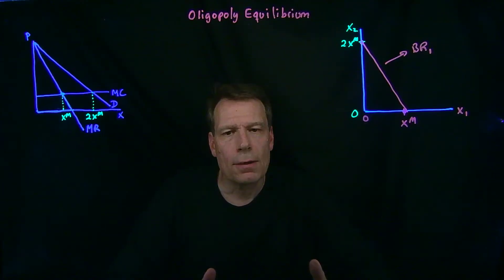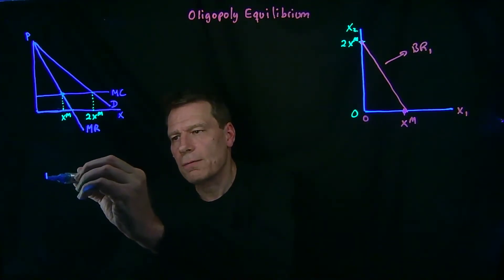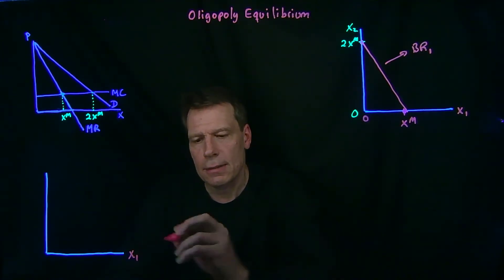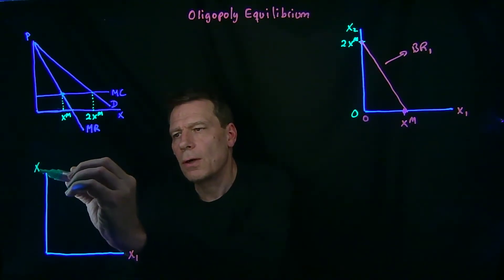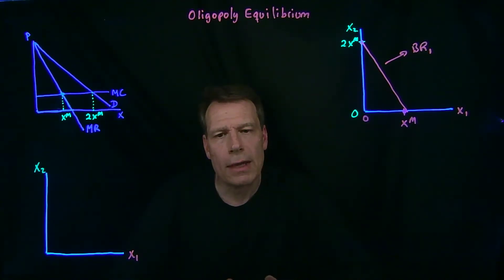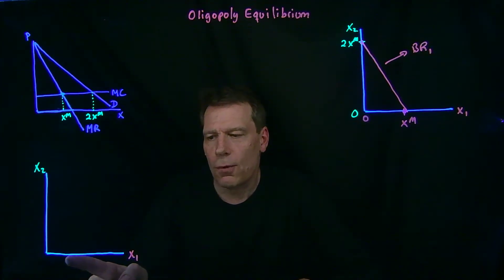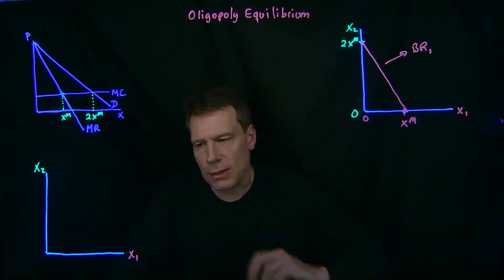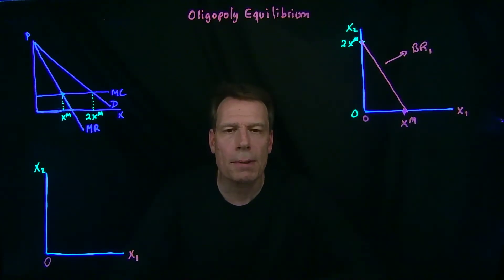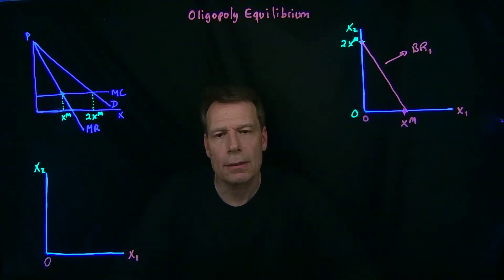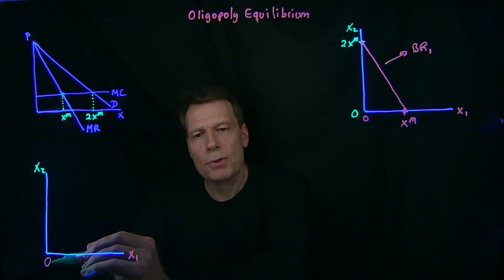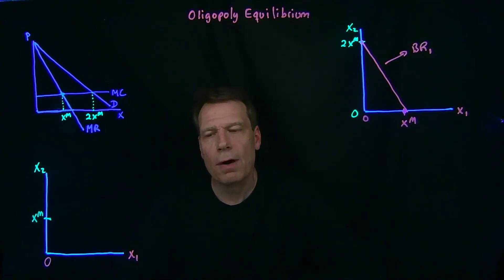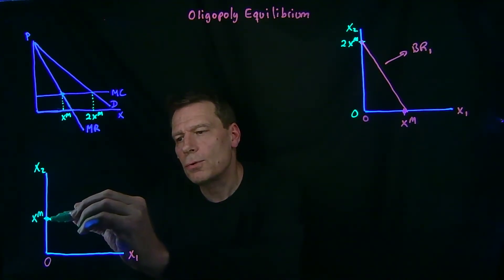Now we can do the same thing for firm 2. We draw the same kind of graph, putting the quantity that firm 1 is producing on the horizontal axis and the quantity that firm 2 is producing on the vertical axis. Now we ask: for different quantities that firm 1 might produce, what is firm 2's best response? If firm 1 produces nothing, then firm 2 is a monopoly, and so it's going to produce the monopoly quantity. The best response to firm 1 producing nothing is for firm 2 to produce the monopoly quantity — that gives us our first point on firm 2's best response function.